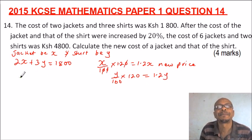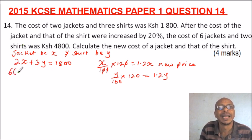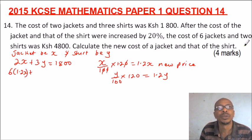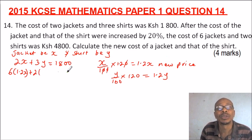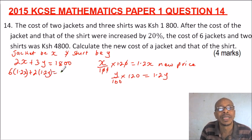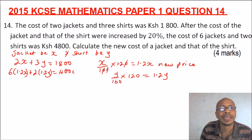Now we can write the second equation: six jackets at the new cost of 1.2x, plus two shirts at the new price of 1.2y, equals 4,800 Kenyan shillings.